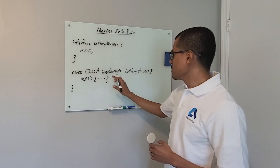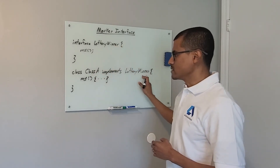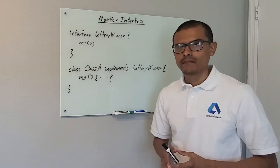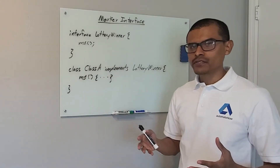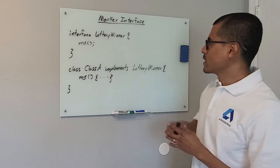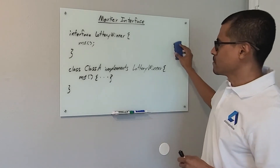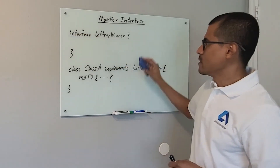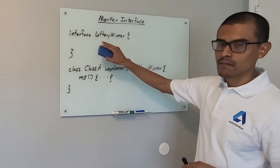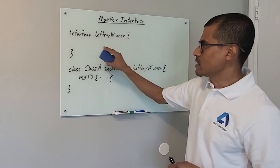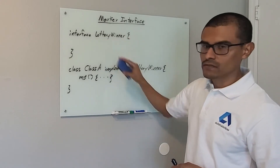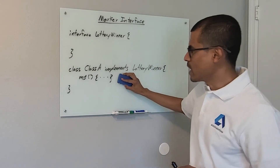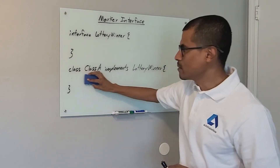This interface is saying that this method is required for any class implementing it. Class A is implementing that interface, therefore it is required to have this method. Now that we understand what an interface does, let's go ahead and remove this method from this interface. Now this is a blank interface — there is nothing inside of the body of this interface. Therefore, this class will not be required to implement anything.